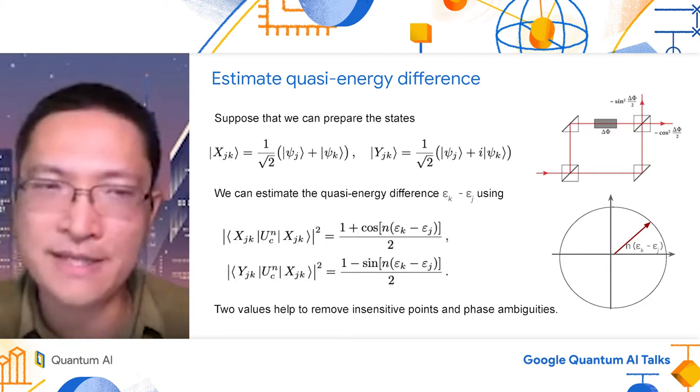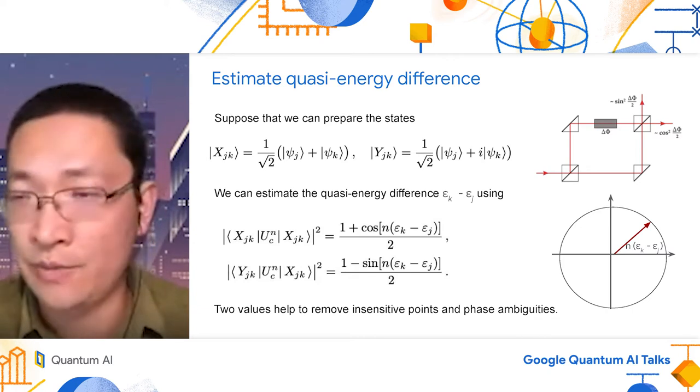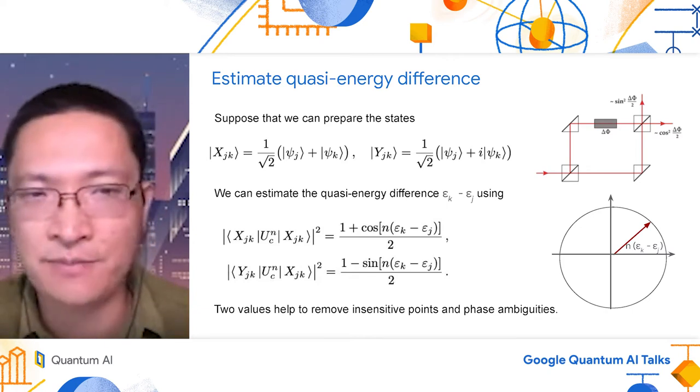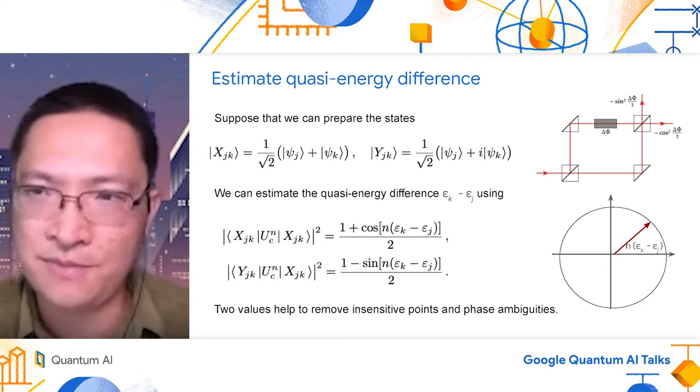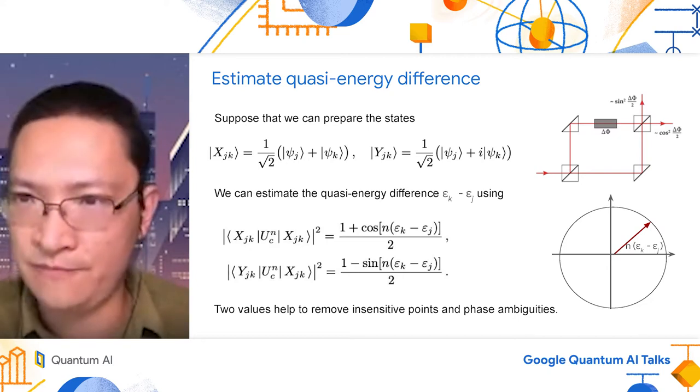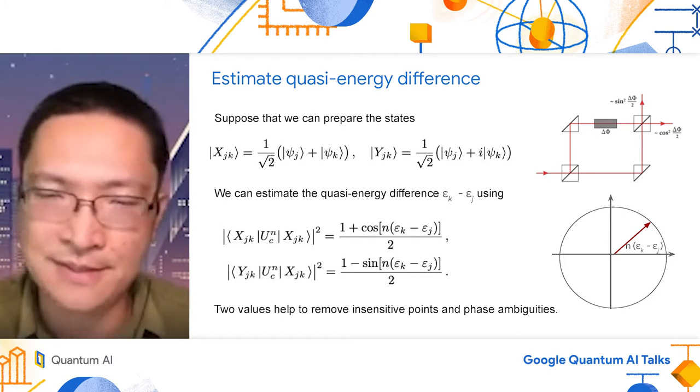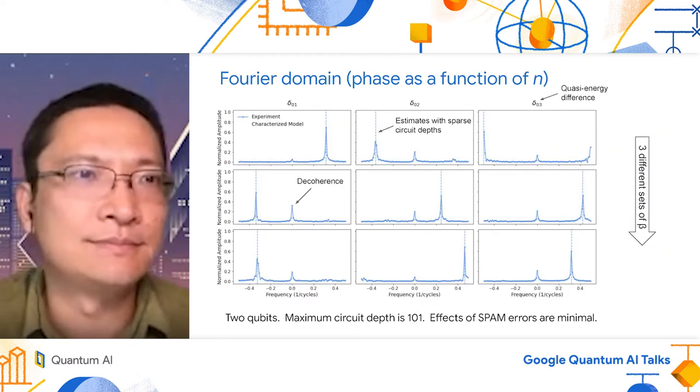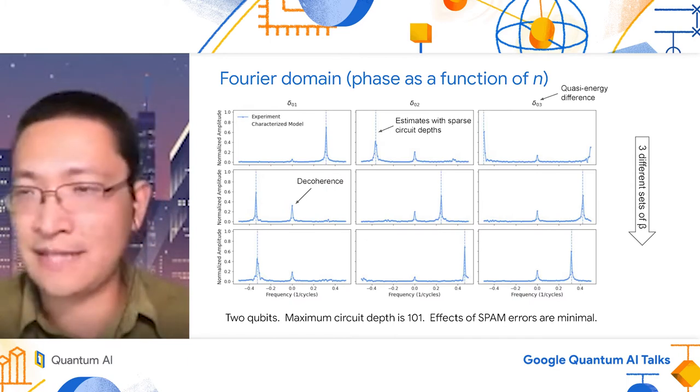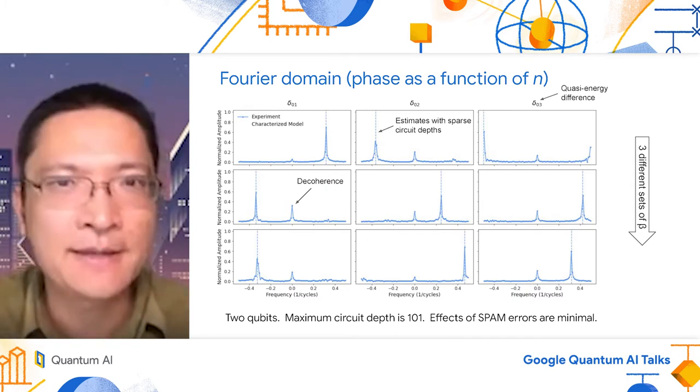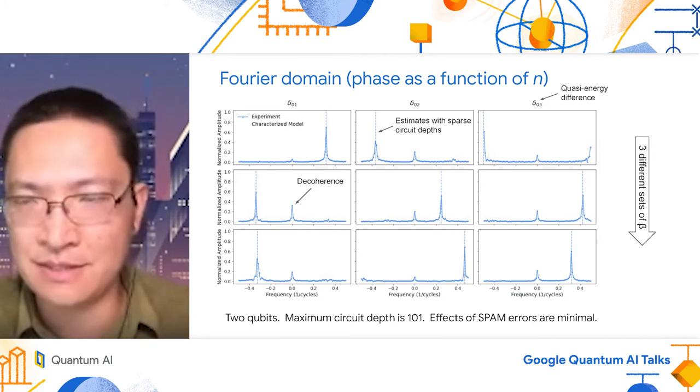By using these two information, you get the information of cosine n times epsilon k minus epsilon j and also the sine of n times epsilon k minus epsilon j. So putting these together, you get the phase information. In principle, we only need one of these terms. The reason that we put two of them is because we can remove the phase insensitive point where the derivative of the probability with respect to the phase shift goes away, and also we can remove phase ambiguity. You may ask that since we do not have the ideal gate, we cannot prepare the ideal initial state. But our method is very robust to state preparation error.